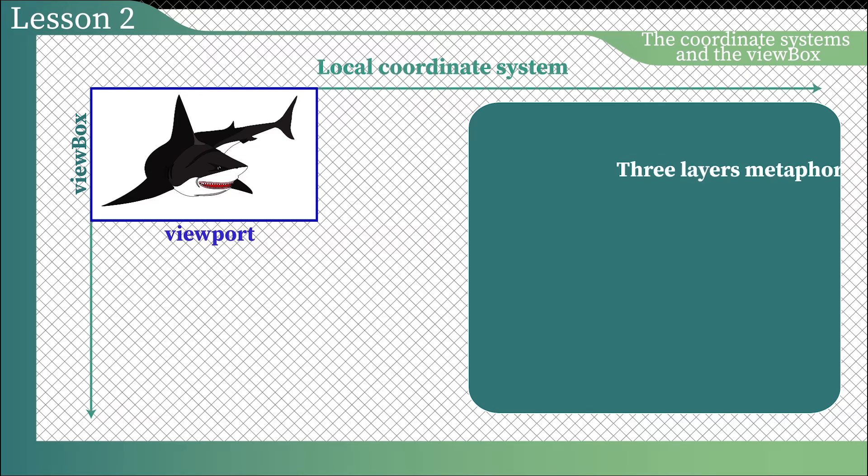We use layers as a metaphor to describe the SVG element structure. We have figured out that the SVG element creates two coordinate systems. The local coordinate system is where the graphics live and the coordinate system of the viewport. The local coordinate system is used for the graphics rendering and for the viewbox positioning. The viewbox creates a window in the mask layer through which we can see the graphics. The viewbox has the same measurement unit as the local coordinate system.